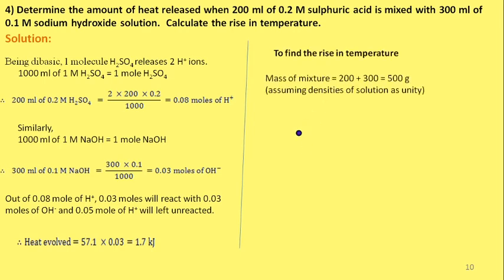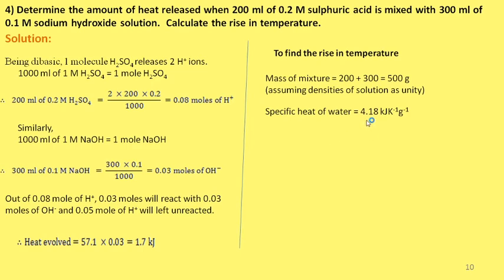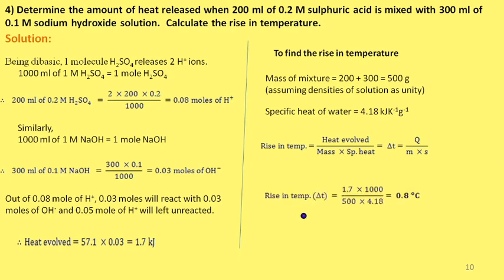To find the rise in temperature: mass of mixture = 200 + 300 = 500 g (assuming density = 1); specific heat of water = 4.18 J/g·°C. Rise in temperature = heat evolved / (mass × specific heat) = 0.8°C. So when 200 ml of 0.2 M sulfuric acid is mixed with 300 ml of 0.1 M sodium hydroxide, heat evolved is 1.7 kJ and rise in temperature is 0.8°C.